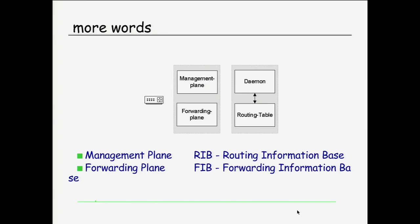These two planes go along with two other terms: the RIB, the Routing Information Base, and the FIB, the Forwarding Information Base. On a software router like OpenBSD, we have a similar division. We have the routing table in the kernel, and the kernel does all the forwarding of IP packets. We have pieces of software that talk to the kernel through something called the routing socket — essentially the same categories.